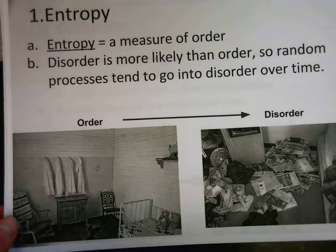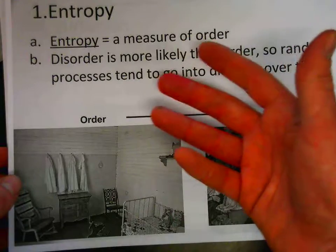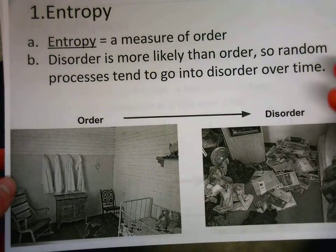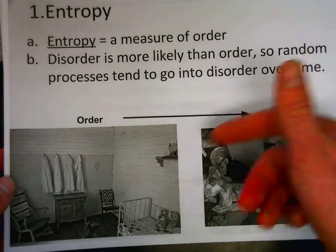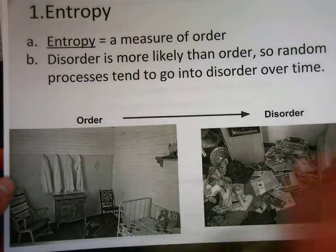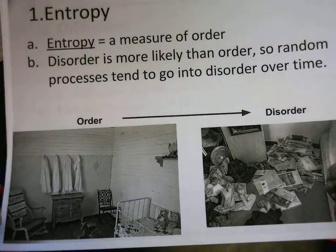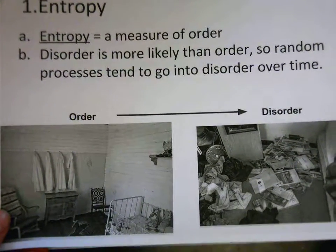So we have entropy in combination with enthalpy. So energy and the probability are the factors that influence whether a process happens spontaneously or not. That's it. Thank you guys.